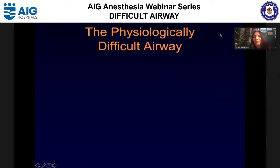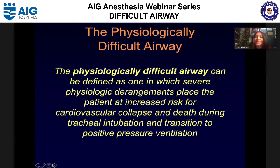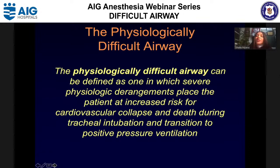What do we mean by physiologically difficult airway? By definition, it is one in which physiological derangements increase the risk of cardiovascular collapse and death during tracheal intubation, and also during transition to positive pressure ventilation. Once you intubate and start mechanical ventilation, the positive pressure and decreased venous return cause hypotension again. This high-risk situation during tracheal intubation is why it's important to recognize this entity beyond just anatomical difficulty.